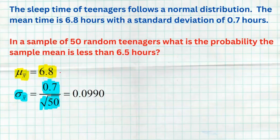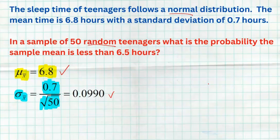We should check conditions. The center is 6.8 only if samples are random — and they are. The standard deviation formula requires independence, which we can assume as long as our sample of 50 is under 10% of the population — which it certainly is, since there are hundreds of thousands of teenagers. Finally, we need the shape to be normal. Since the population is already normal, any sample size works. And even if it weren't, the Central Limit Theorem guarantees normality when the sample size is greater than 30, which it is here. So our sampling distribution is definitely normal.